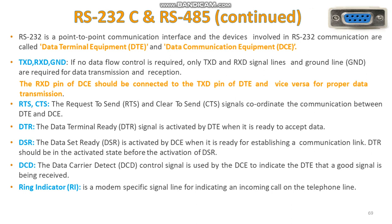The RTS and CTS pins — Request to Send and Clear to Send — are responsible for coordinating communication between DTE and DCE. DTR, the Data Terminal Ready signal, is activated by DTE when it is ready to accept data. DSR, Data Set Ready, is activated by DCE when it is ready for establishing a communication link. DCD, Data Carrier Detect, is a control signal used by DCE to indicate to DTE that a good signal is being received. The last pin is RI, Ring Indicator, a modem-specific signal line for indicating an incoming call on a telephone line.